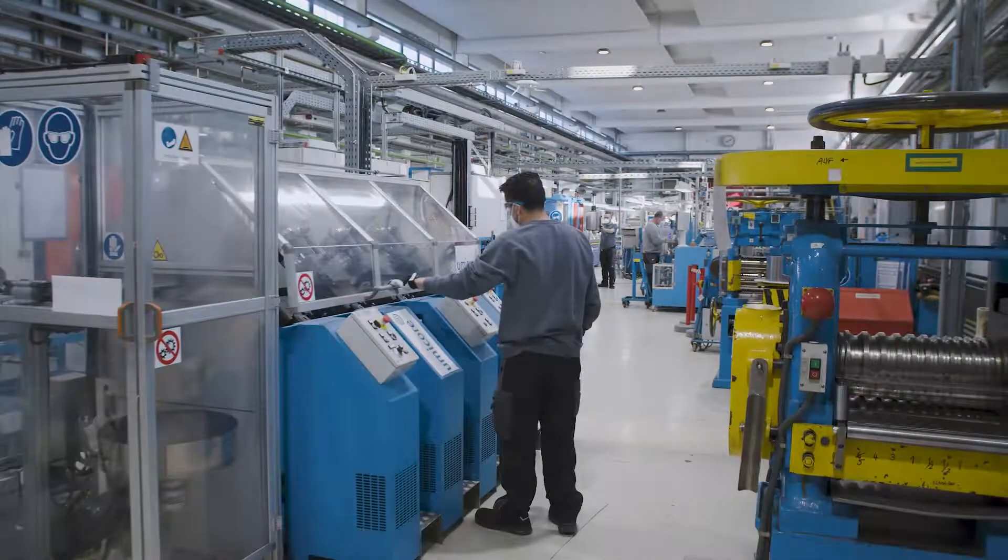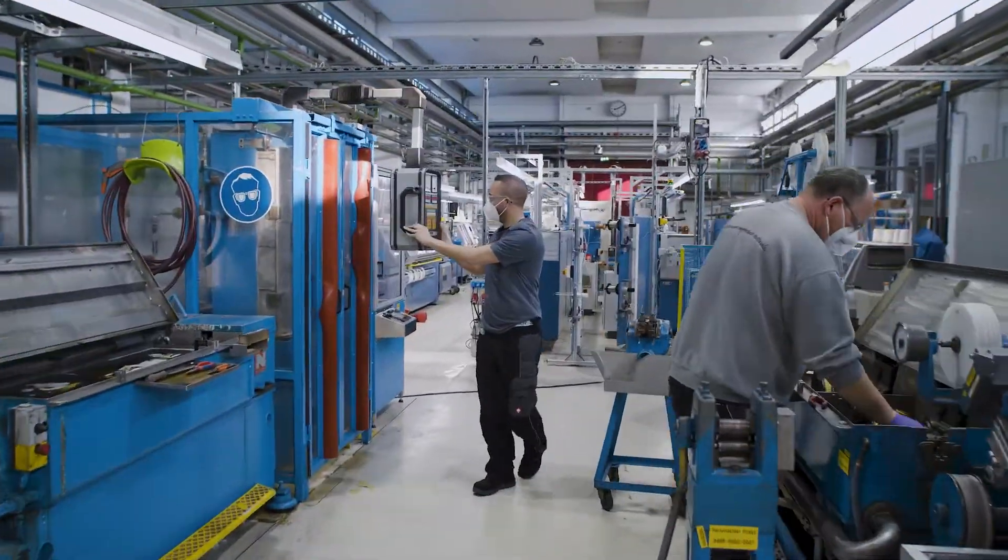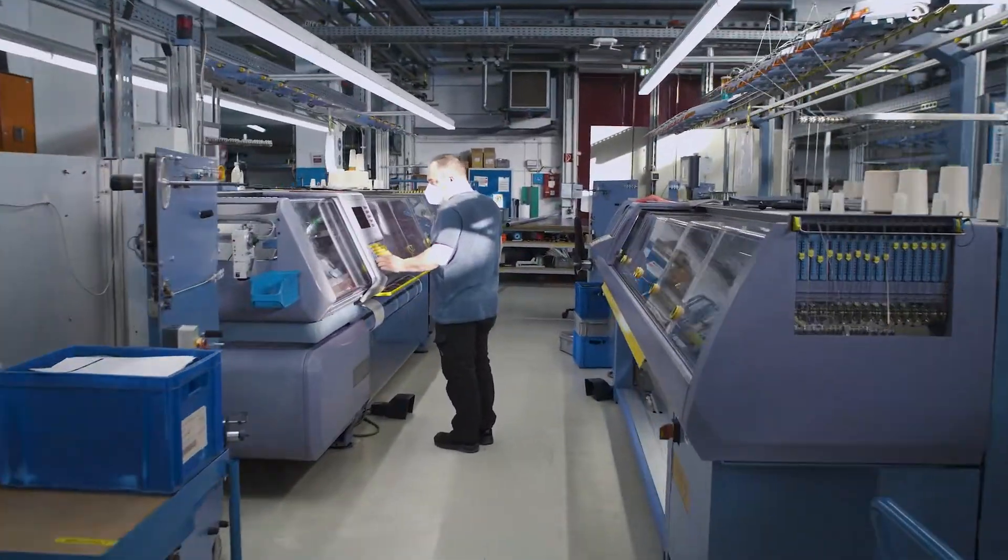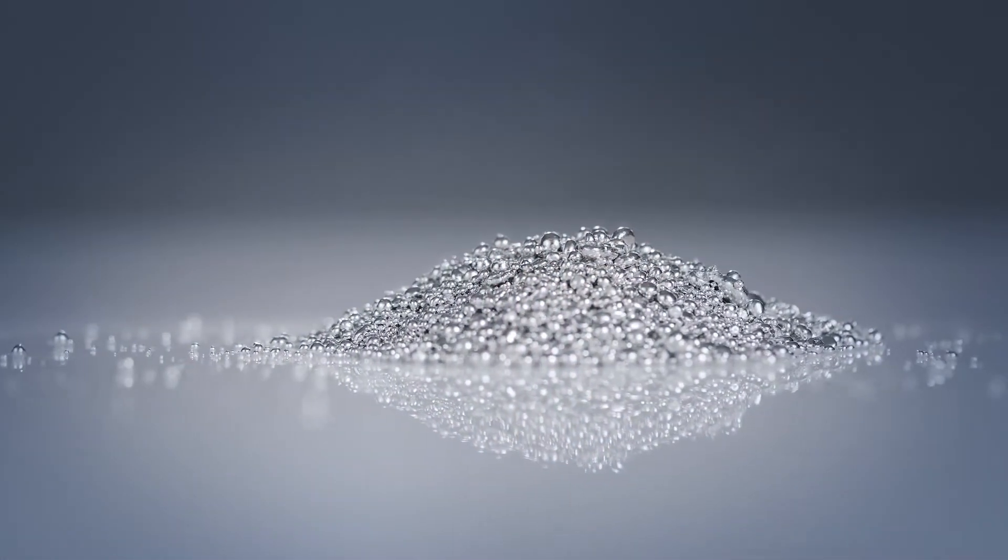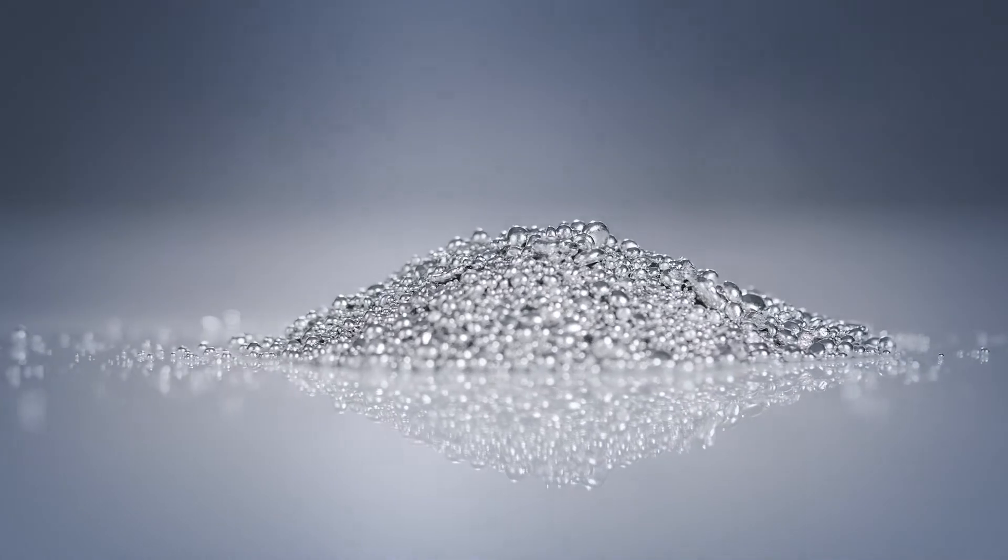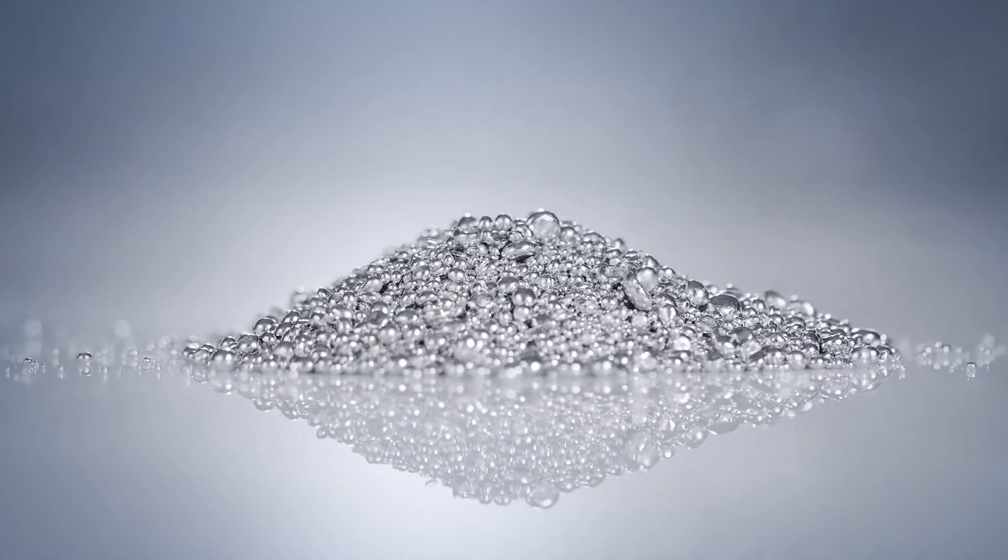The Umicore PEM manufacturing hall in Hanau enables short paths and quick production flows from ingots all the way to the finished gauzes. In order to manufacture gauzes, the first step is the preparation of the material.